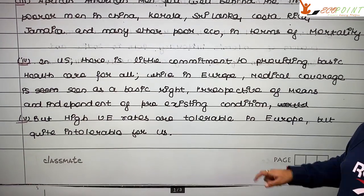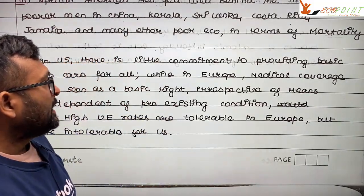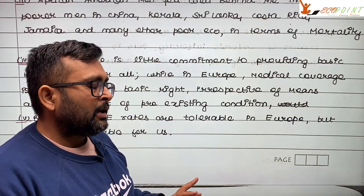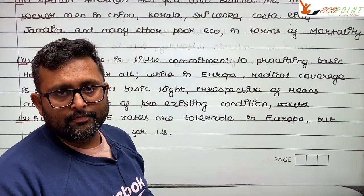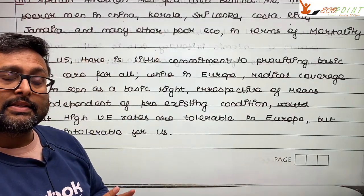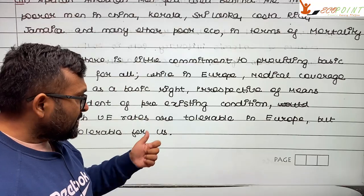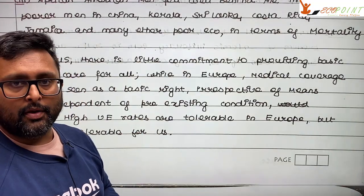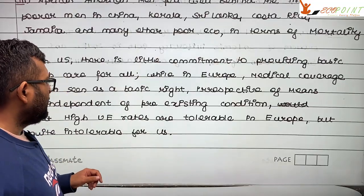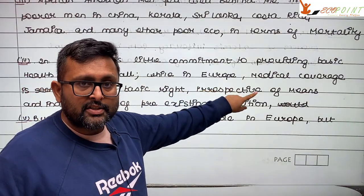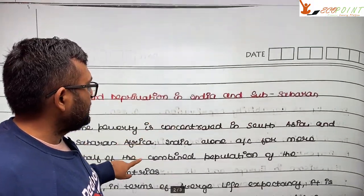Why is this true in the US but not in Europe? In the US, there is not much commitment to providing universal health coverage to everyone. In Europe, proper medical coverage is treated as a basic right of every individual. In the US, high unemployment is socially unacceptable, but in Europe it is more tolerated through unemployment allowances. However, the US lacks the medical coverage commitment that Europe has.